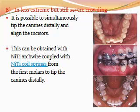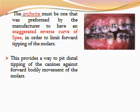In less extreme but still severe crowding, it is possible to tip the canine distally and align the incisors. This can be achieved with a NiTi arch wire coupled with a NiTi coil spring from the first molar to tip the canine distally. The arch wire must be one pre-formed by the manufacturer to have an exaggerated reverse curve of Spee in order to limit forward tipping of the molars. This provides a way to balance distal tipping of the canine against forward bodily movement of the molars.